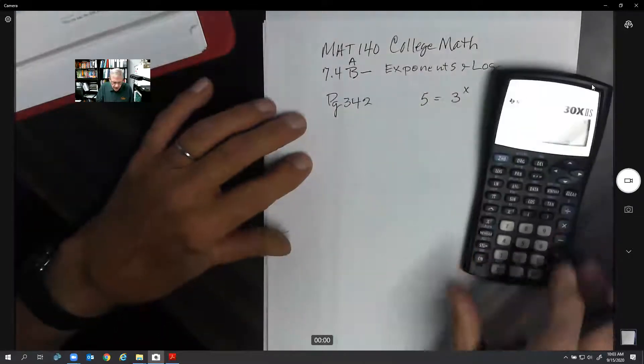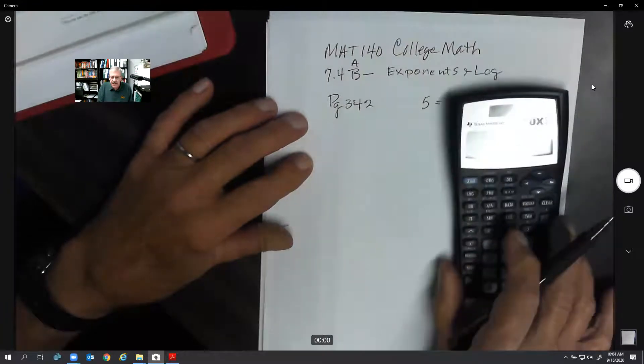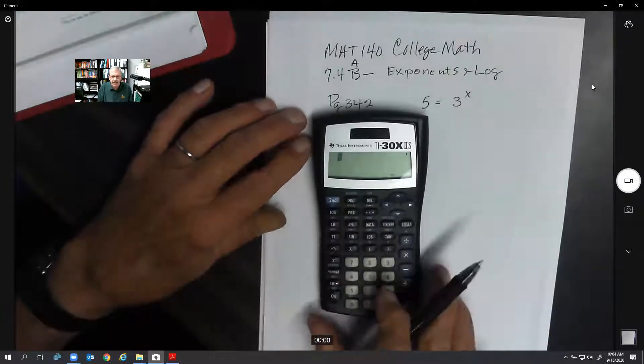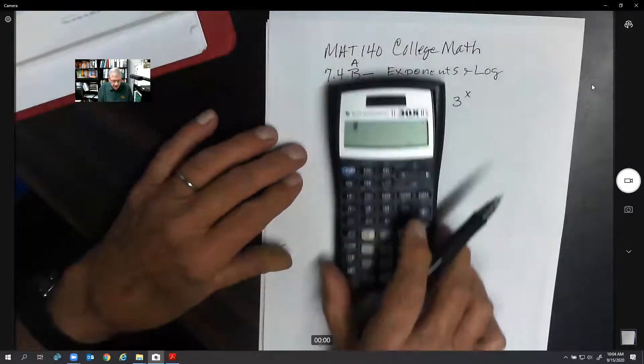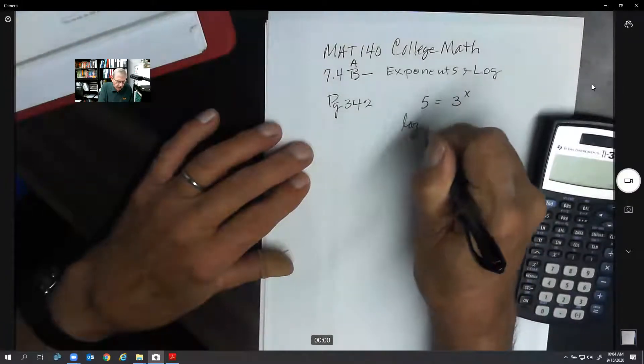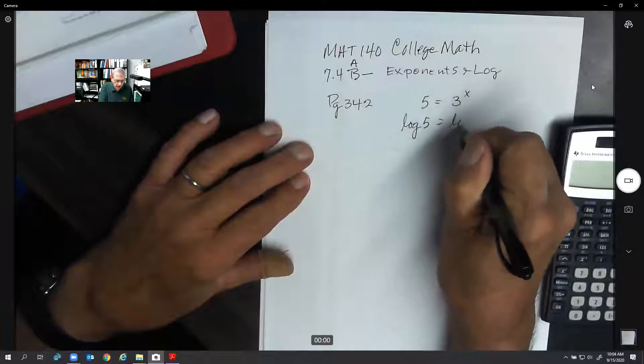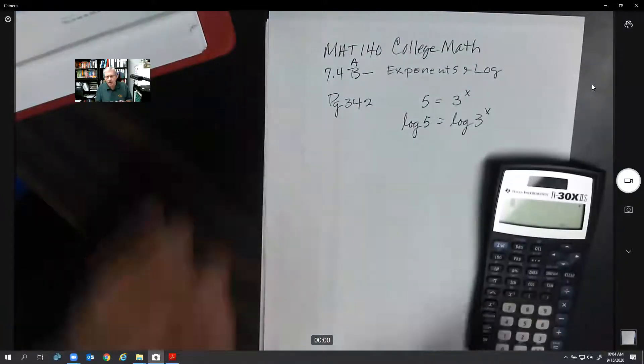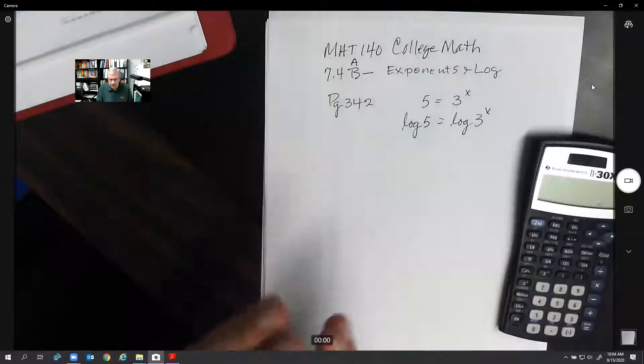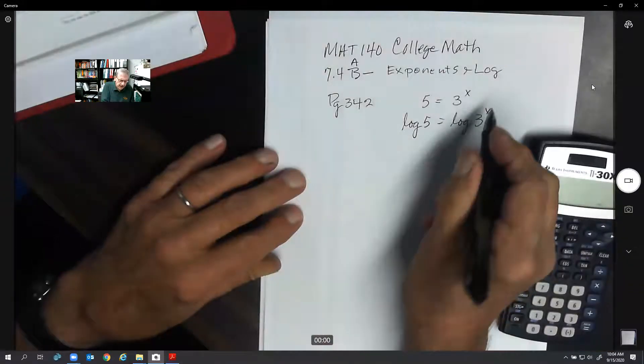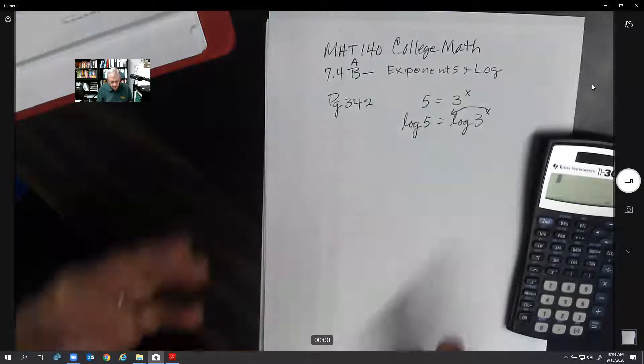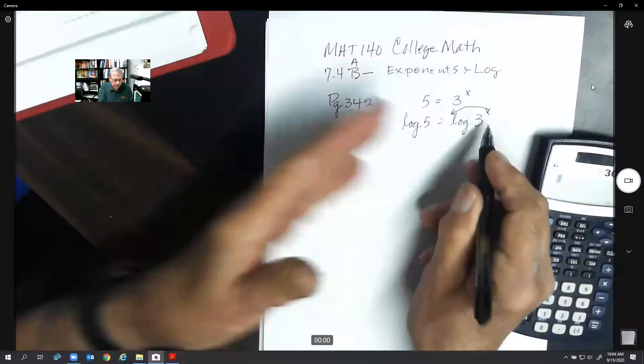LOG stands for logarithm. If you don't have this calculator, you still should have a LOG key. You have to get a scientific calculator. We're going to take the log of both sides: log 5 equals log 3^x. Logarithms have a certain property where we can simply put this x in front of the word log. We can change this instead of a power to a multiplication problem.